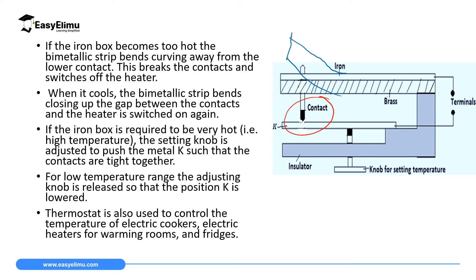When the strip bends upward, it moves the contact away from the electricity terminal, creating a gap — so the iron box stops heating and begins to cool. When the temperature drops below the required level, the bimetallic strip loses heat and returns toward its straight room-temperature position, reconnecting the contact to the terminal and heating the iron box again.